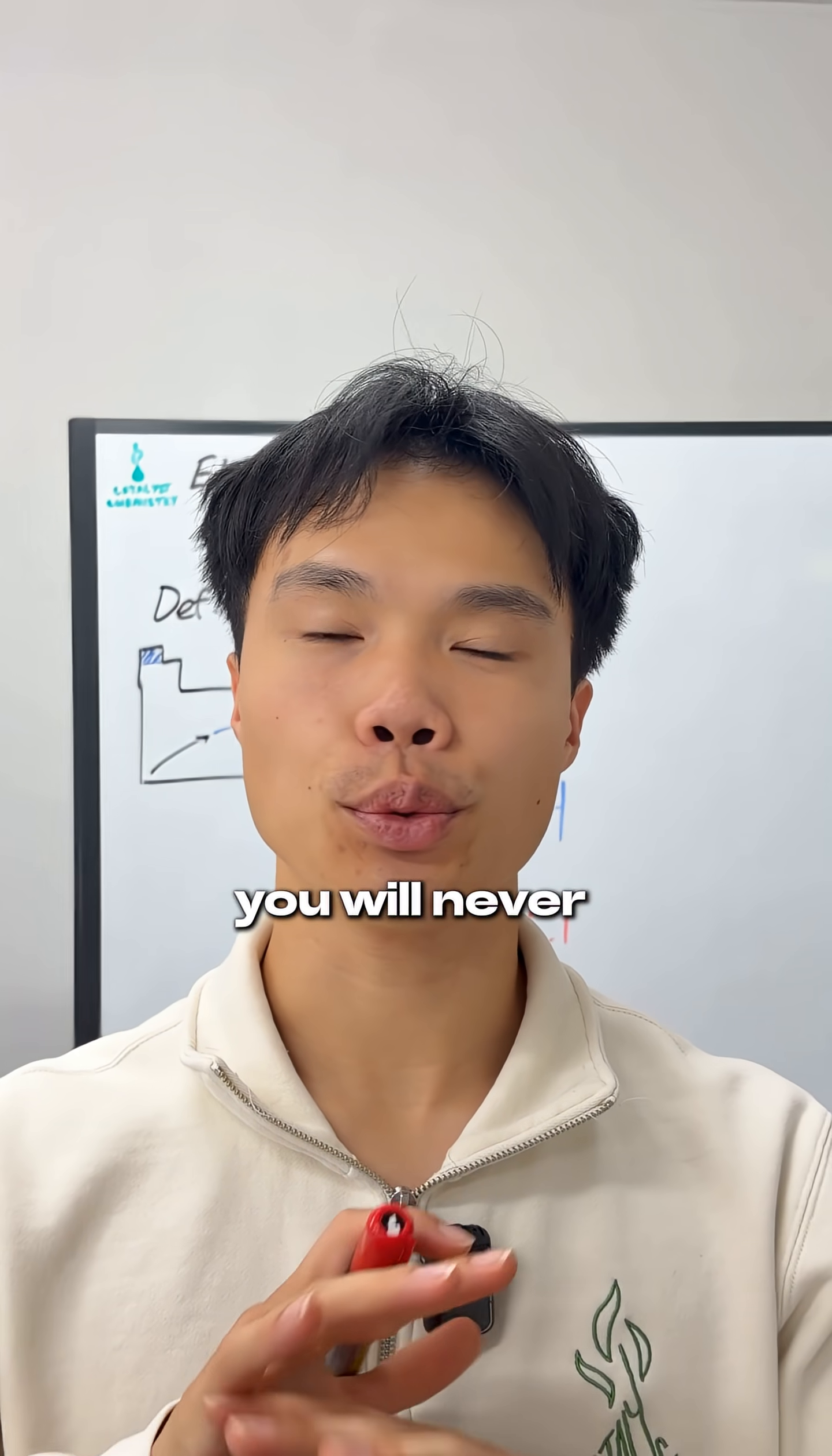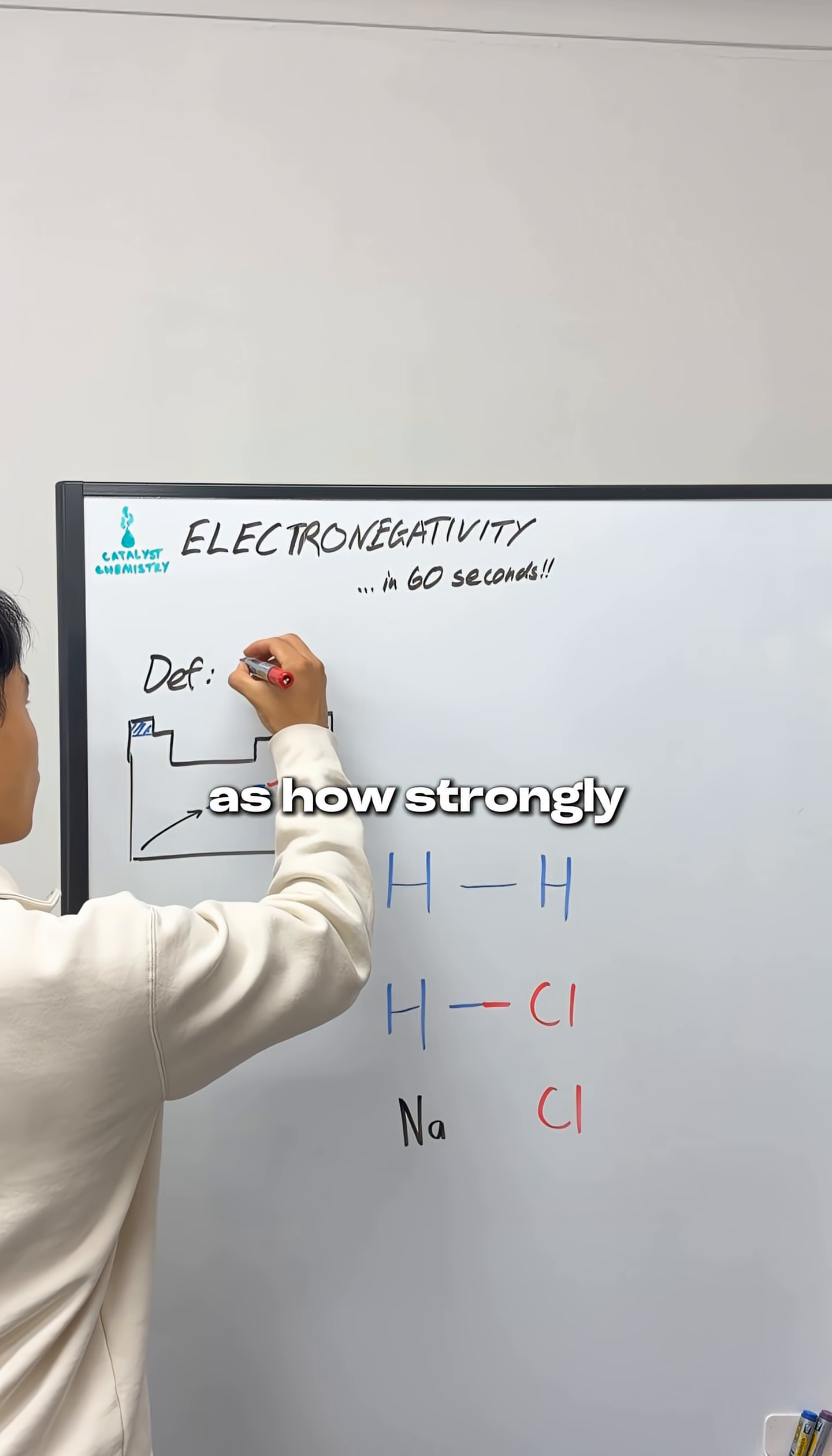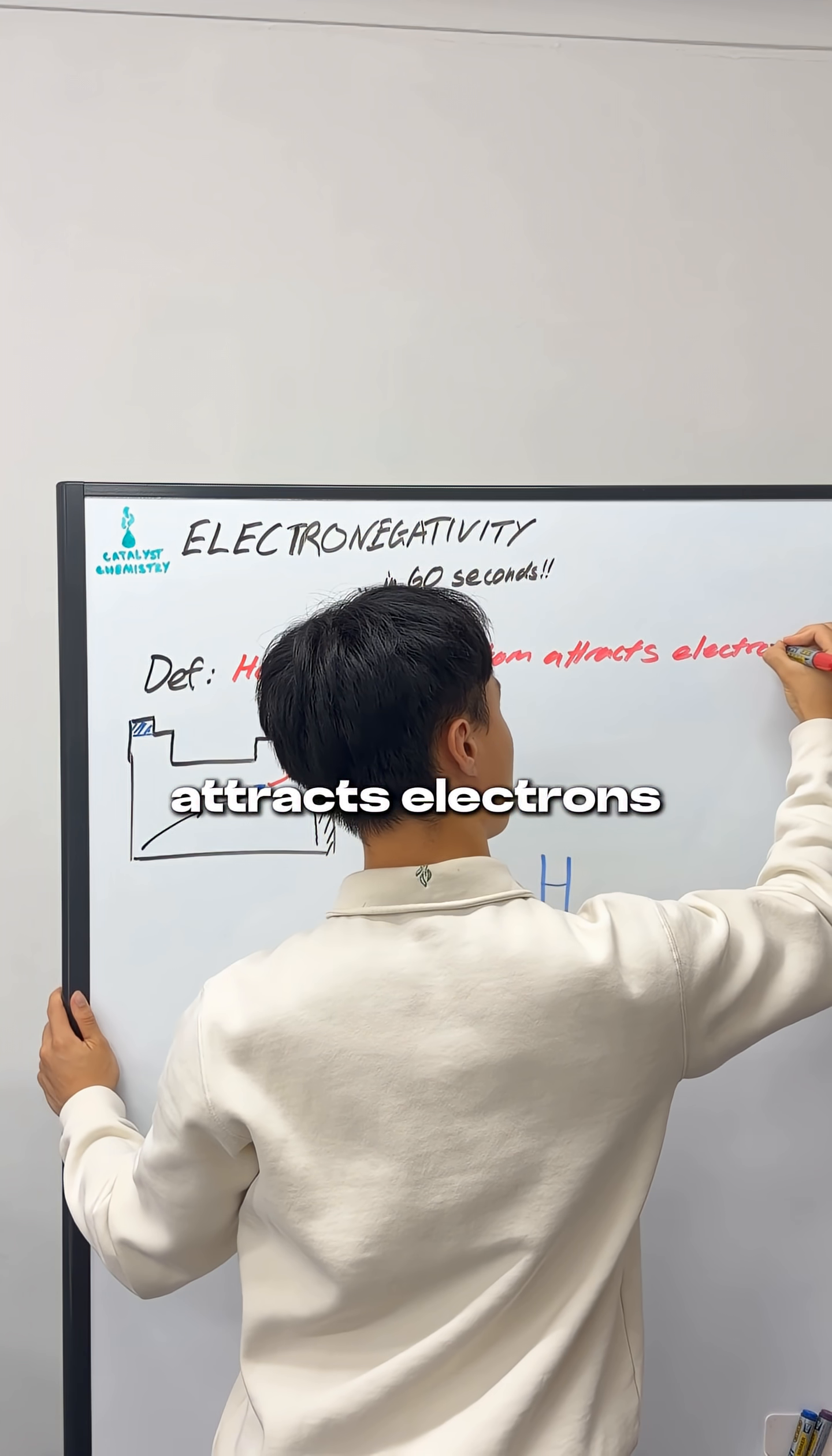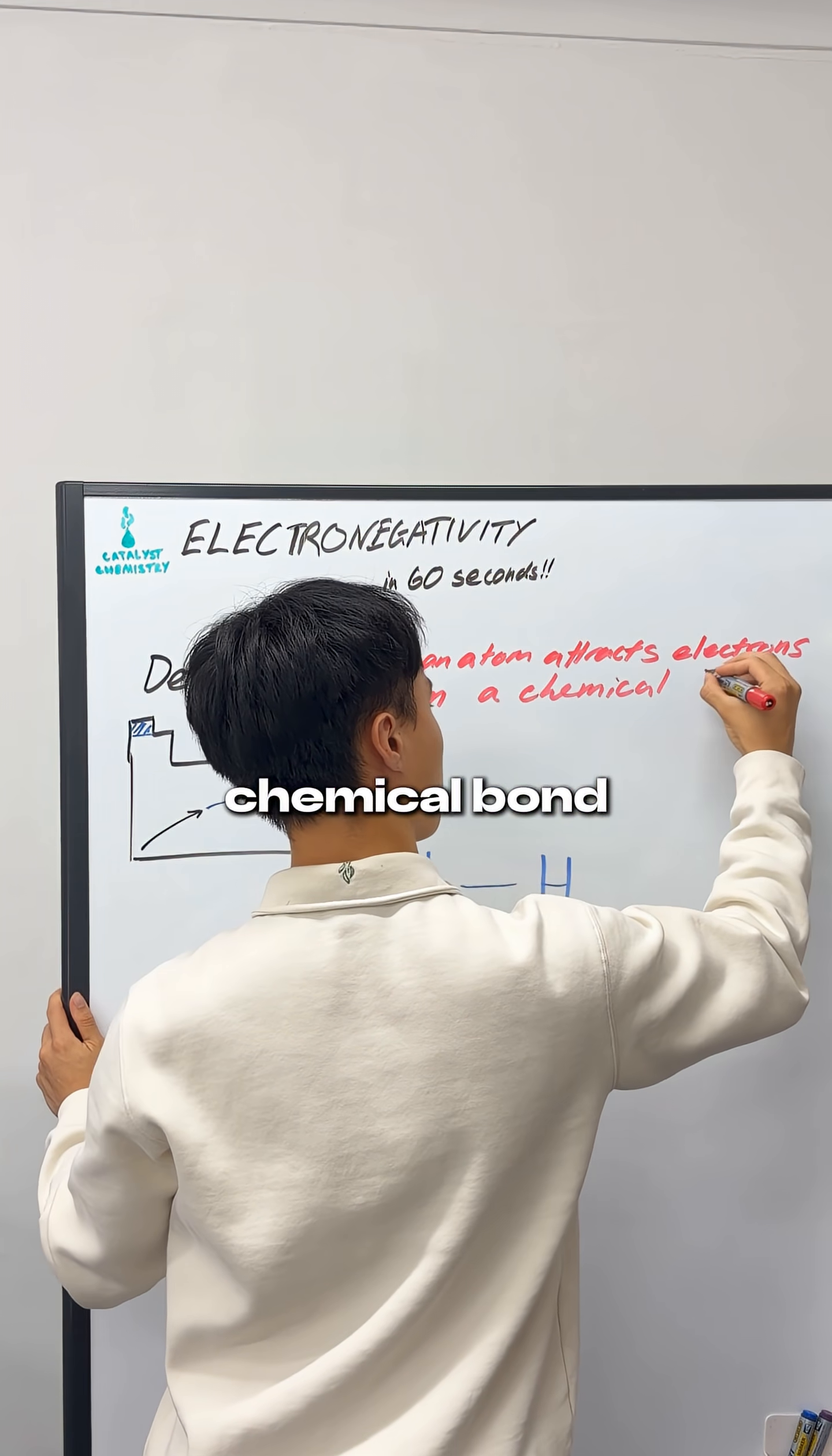If you understand electronegativity, you will never lose marks on a bonding question again. Electronegativity can be defined as how strongly an atom attracts electrons in a chemical bond.